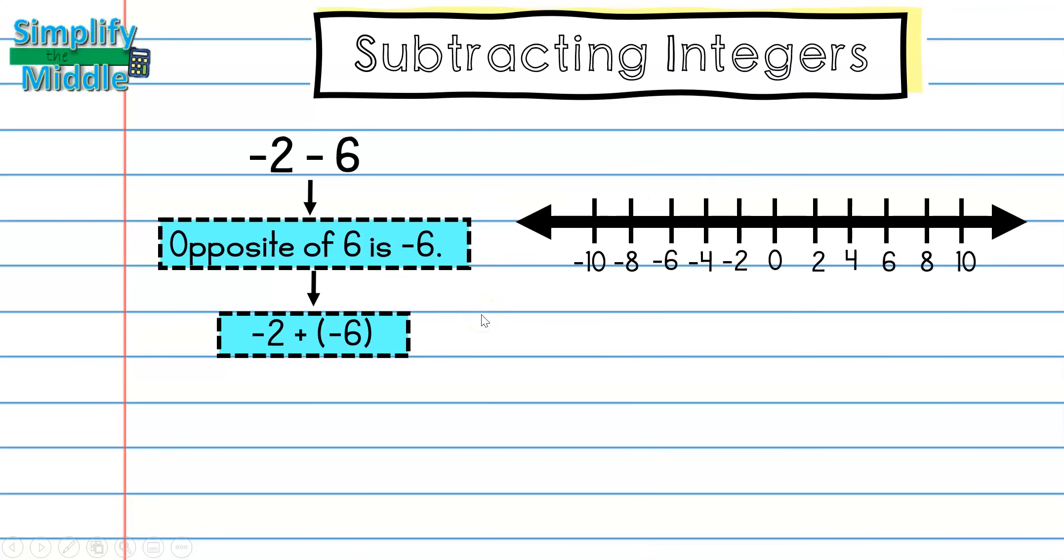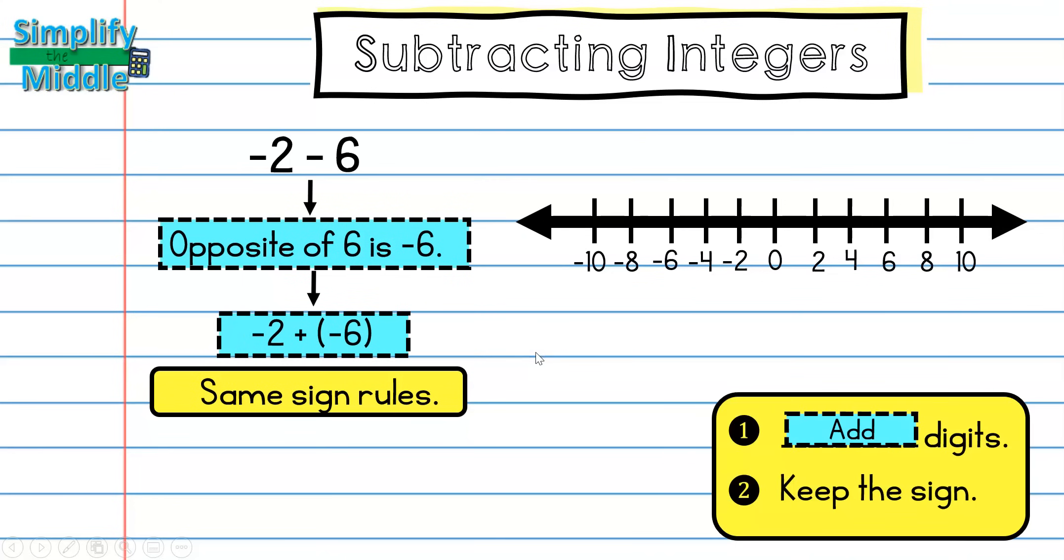Now that we have seen it on the number line, we're going to continue to walk through this with the algorithm. Because these are both negative numbers, we're going to use same sign rules. Remember, our same sign rule says to add the digits together, so 2 plus 6 is 8, and then we're going to keep the sign. So the sign was negative, so my answer will be negative 8. And that was what the answer was on the number line.